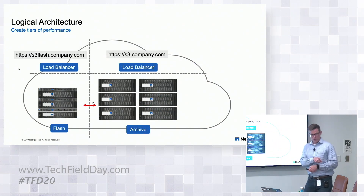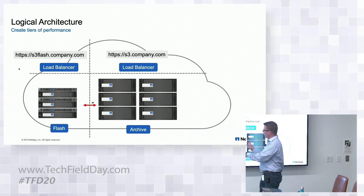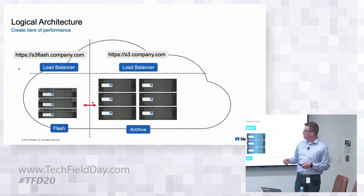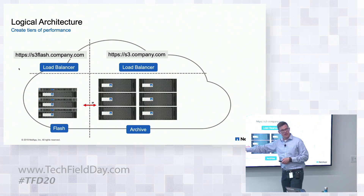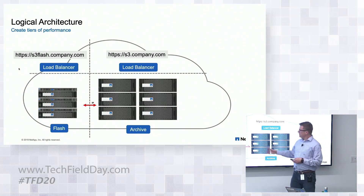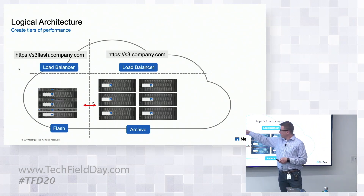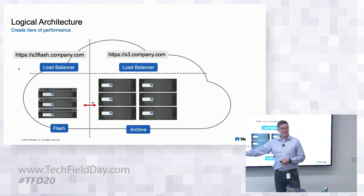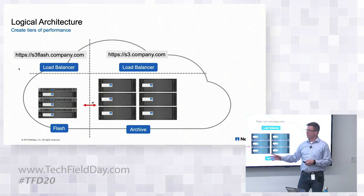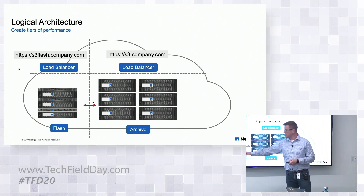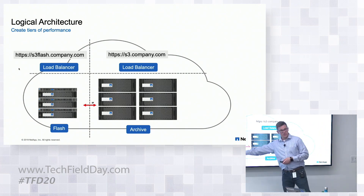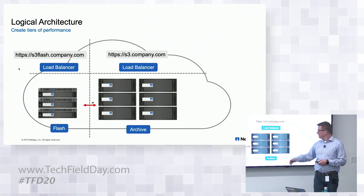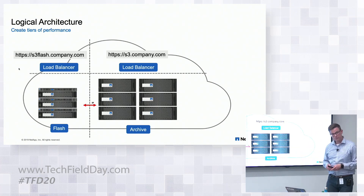This leads to what was discussed earlier about Flash. If I want to put all my Flash into one area to ensure high-performance data lands on Flash and gets read from Flash, I can create a logical site. I'd present a URL like s3flash.company.com, high-performance workloads land on Flash, and I can set an ILM policy to say: if no one's touched an object for 60 days, pull it back. The metadata still lives on Flash, but the object data gets pulled down to another tier of storage, with the ability to re-promote it if needed.